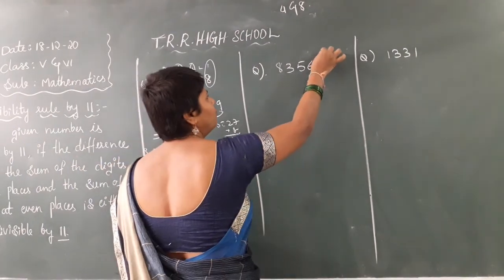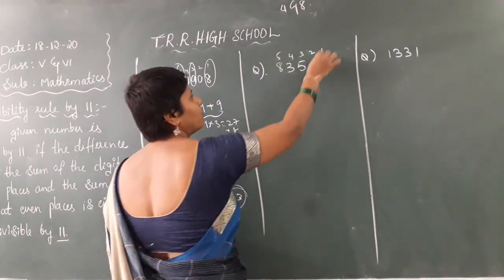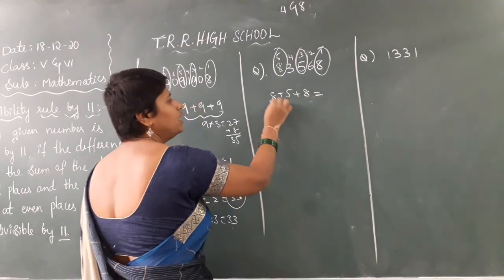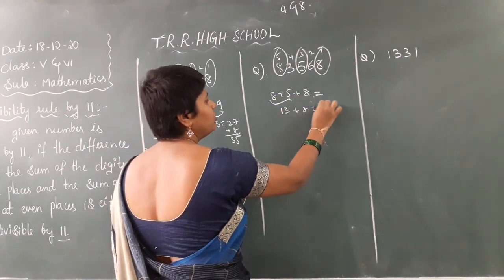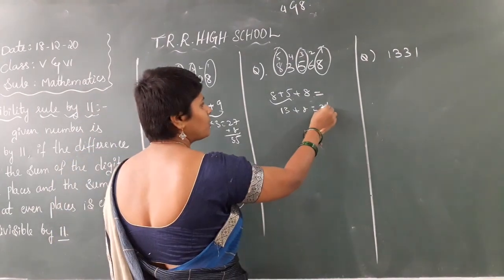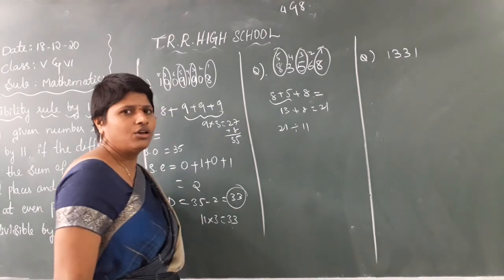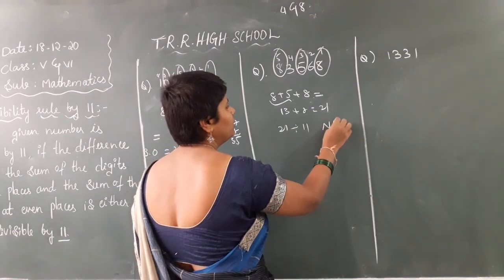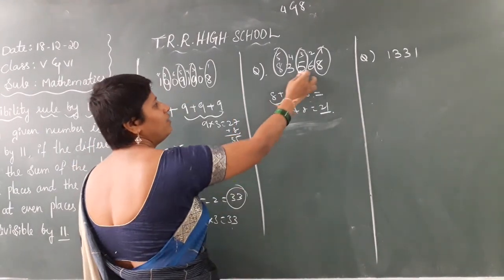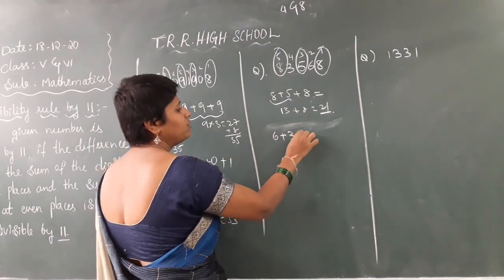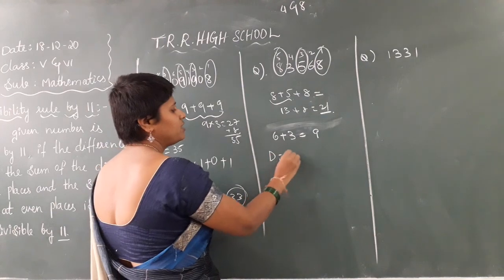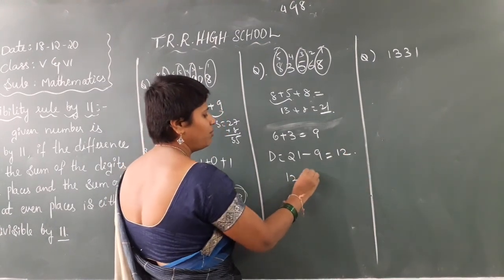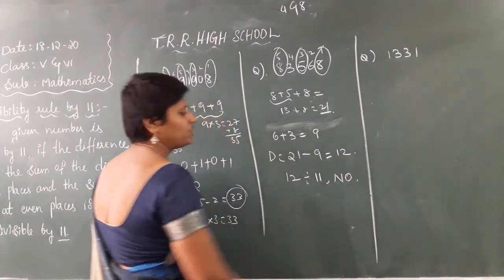Now the same process for the next example. In the odd places, add up 8 plus 5 plus 8, which gives 13 plus 8 equals 21. Now add up the even-place digits: 6 plus 3 equals 9. Find the difference: 21 minus 9 equals 12. Is 12 divisible by 11? No — 11 times 2 is 22, so you don't get 12. Therefore this number is not divisible by 11.